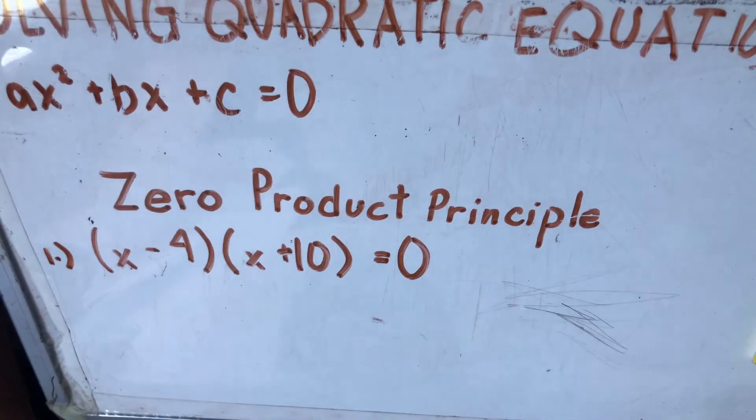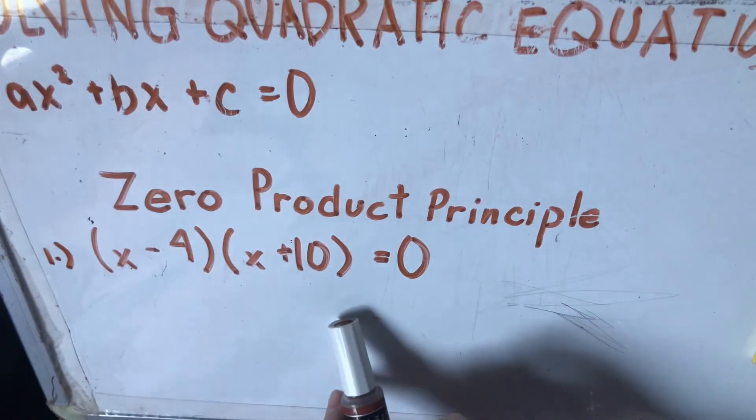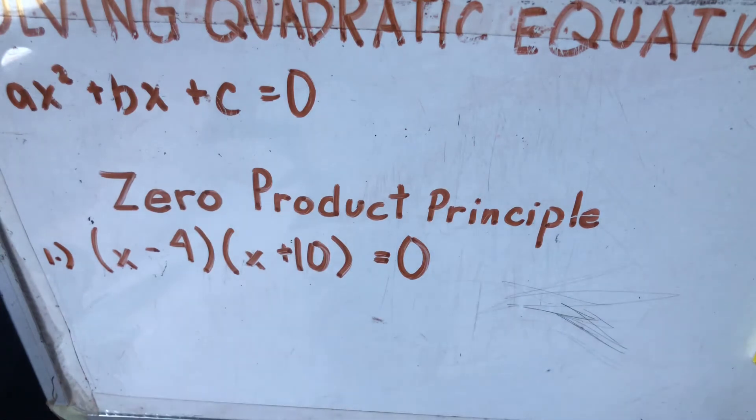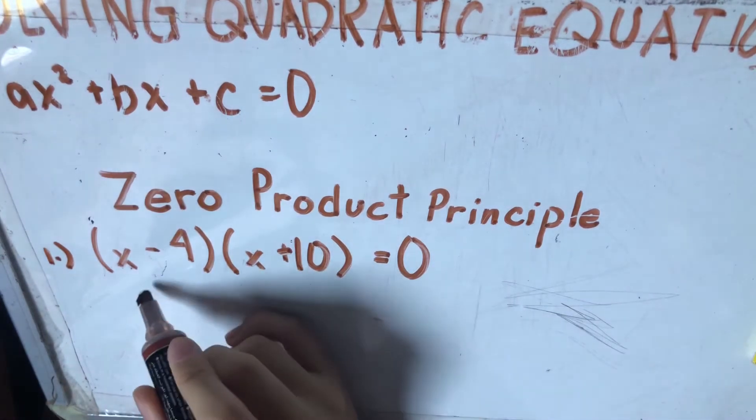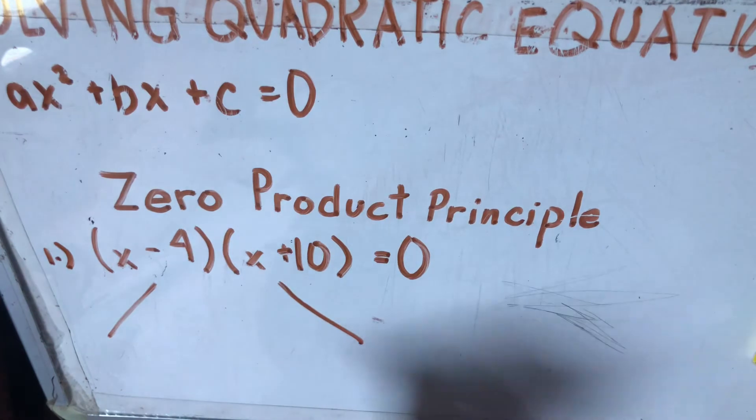Number 1: (x - 4)(x + 10) = 0. So unang gagawin, since ito nga nakasimplify na siya, nakafaktor na, gawin na lang natin, paghiwalay na lang natin.